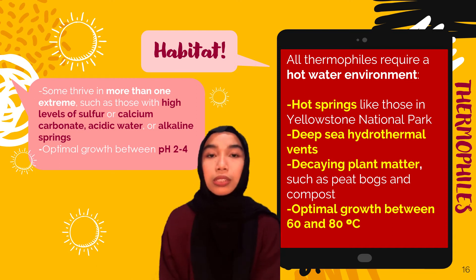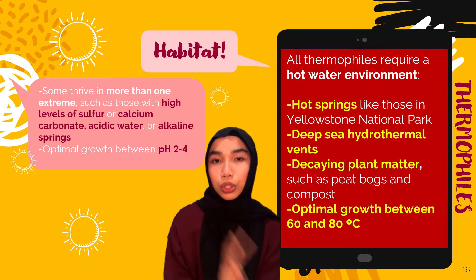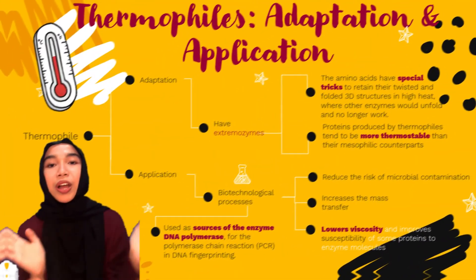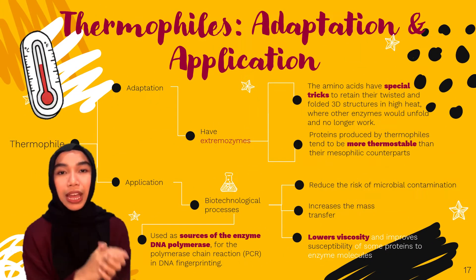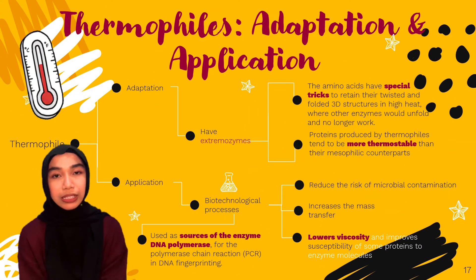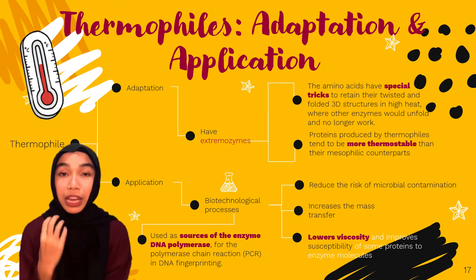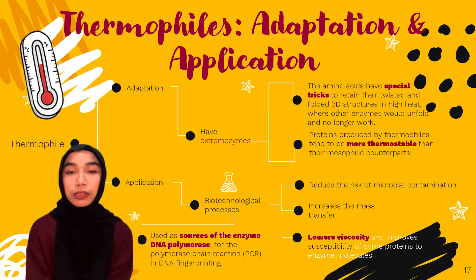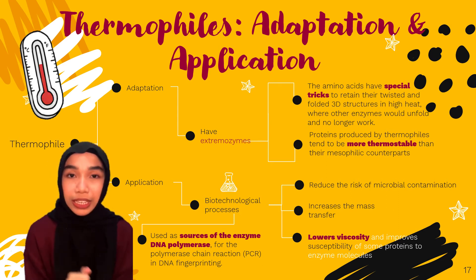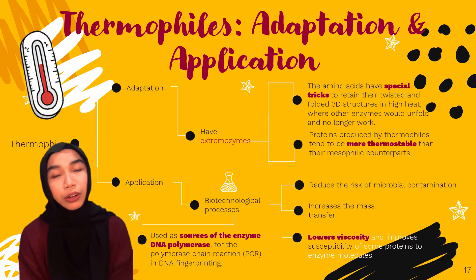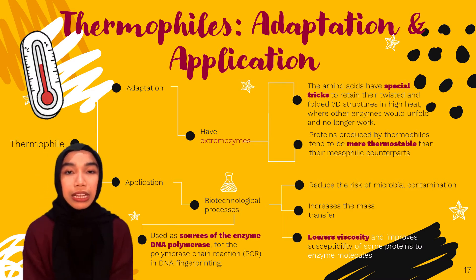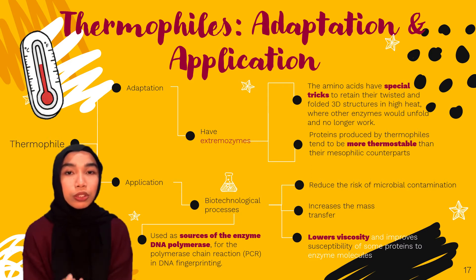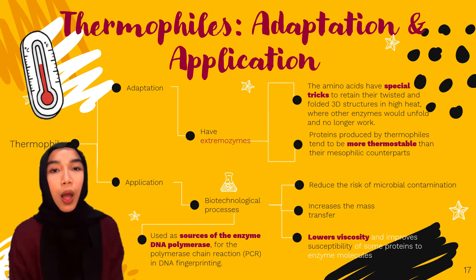Some thermophiles thrive in conditions with more than one extreme, such as places with high levels of sulfur, high calcium carbonate, acid water, or alkaline springs, needing around pH 2 to 4 for optimal growth. Thermophiles have extreme enzymes where the amino acids have special tricks to retain their twisted 3D structure even in high heat, where other organisms would have unfolded and denatured. The proteins produced by thermophiles tend to be more thermostable compared to their mesophilic counterparts.